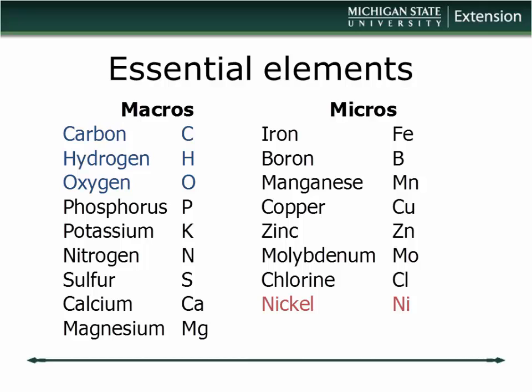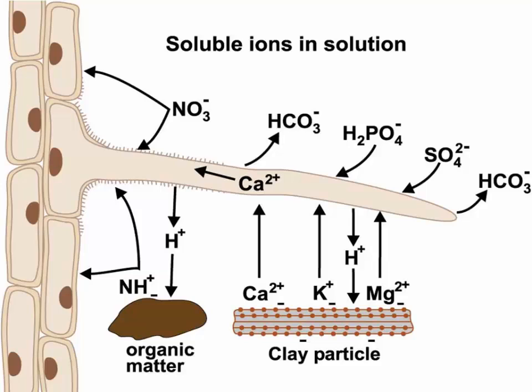A few concepts to remember: nutrient elements are not taken up in their elemental form. Nitrogen, for example — 77% of the air around us — plants can't utilize that. It has to be in an ionic form. For nitrogen, that would be either nitrate or ammonium, which is actually the one element that occurs as both an anion and a cation.